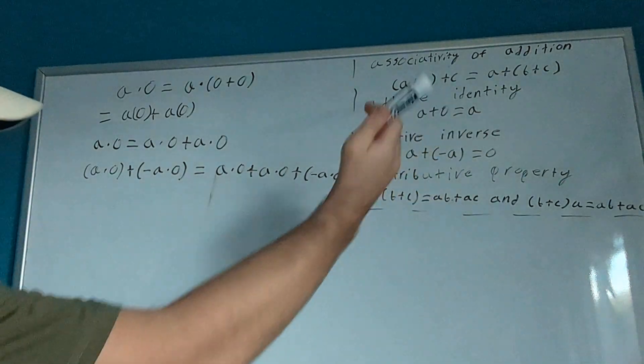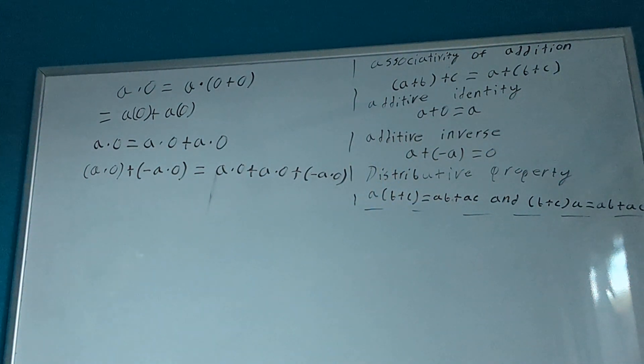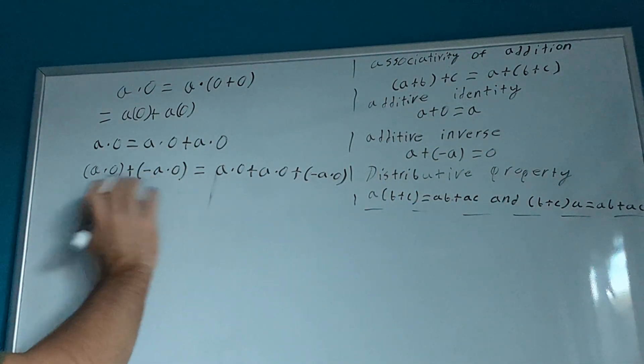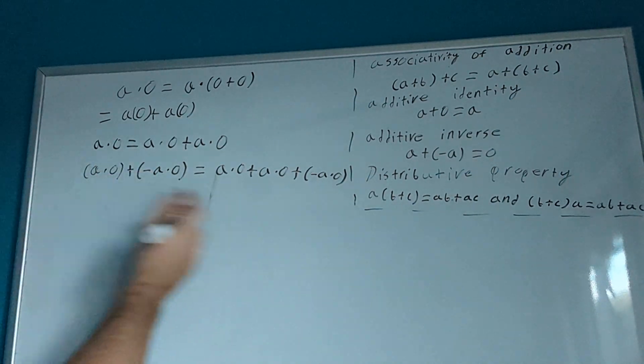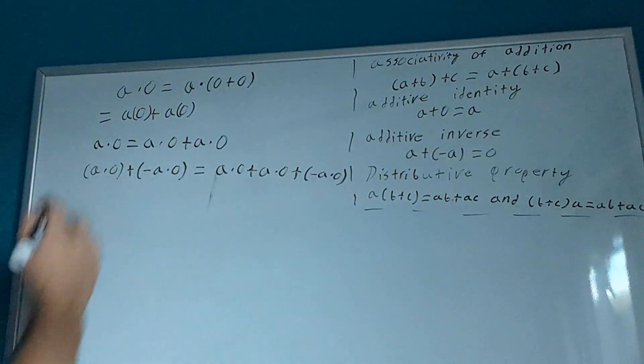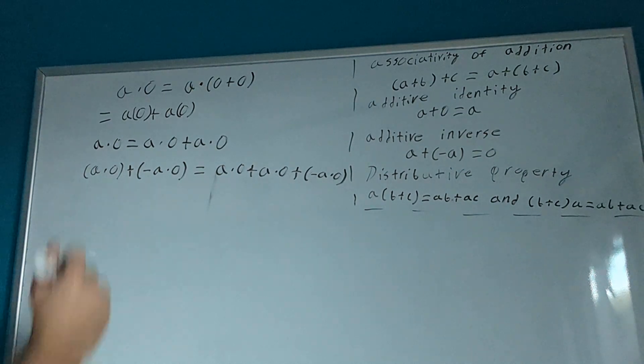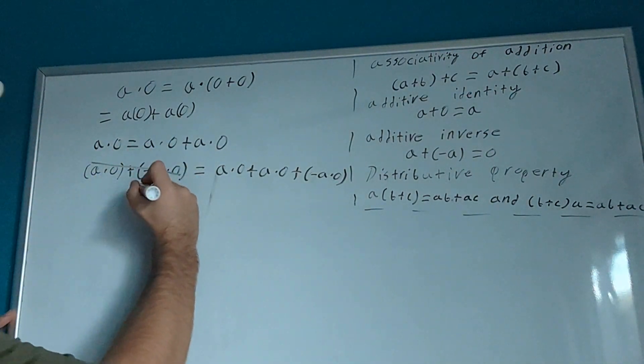Then, from here, we're still going to use the additive inverse, and we have the additive inverse: a plus negative a, in this case, or a times 0 plus negative a times 0. That'll cancel out, and that'll just become 0.